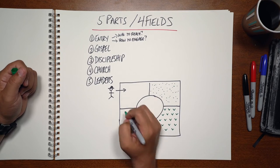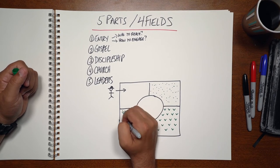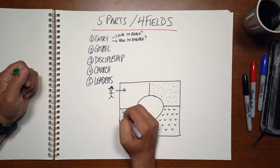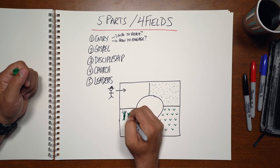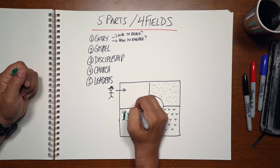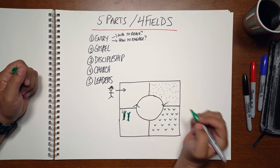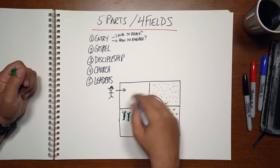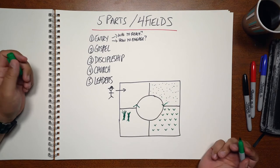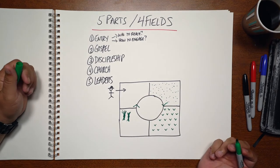And then once it's fully grown, he puts the sickle to it and gathers it together. He takes some of the seed from the harvest and uses it to cause the process to reproduce over and over again.